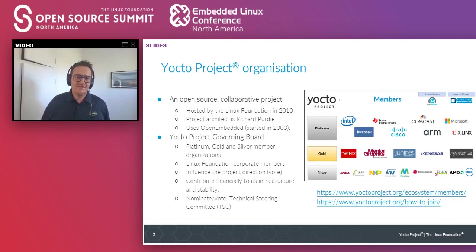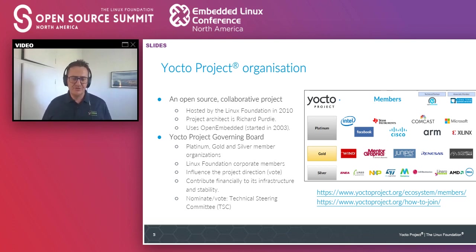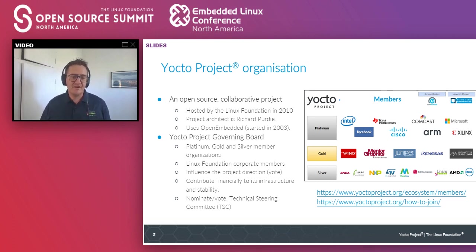The way the project is organized: it's an open source project hosted by the Linux Foundation, actually the first of the Linux Foundation projects, started in 2010. Like most other Linux Foundation projects, there is a governing board made of companies — also Linux Foundation corporate members — with different levels of membership: silver, gold, and platinum. These are companies that want to influence the project. The governing board can elect members of the technical steering committee, which oversees project architecture and technical decisions.